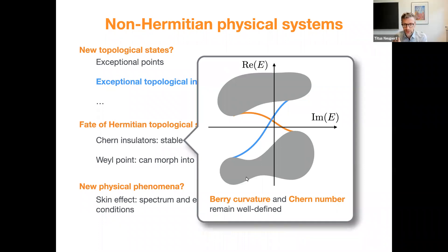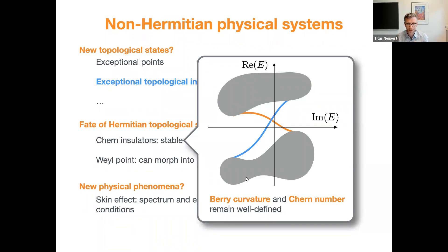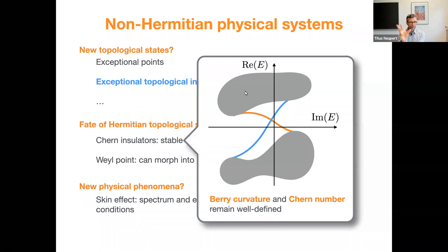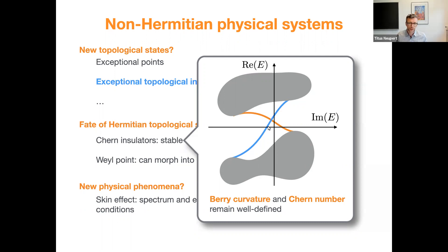What happens to Chern insulators when I introduce non-Hermiticity? Not all that much — they are stable. The Chern bands open up as blobs in the complex energy plane, and the edge states connect these blobs. There will be right-moving and left-moving edge states connecting the two blobs, with a line gap. Berry curvature and Chern numbers remain well-defined concepts.